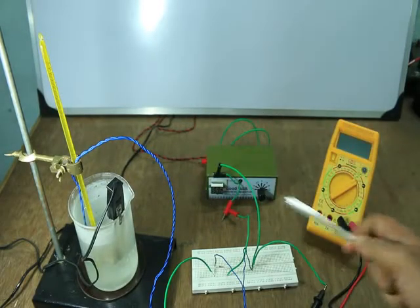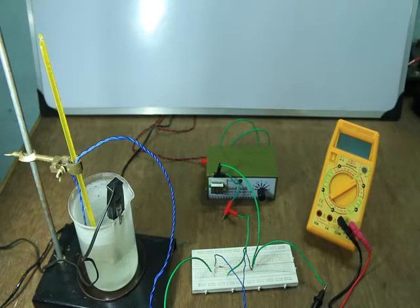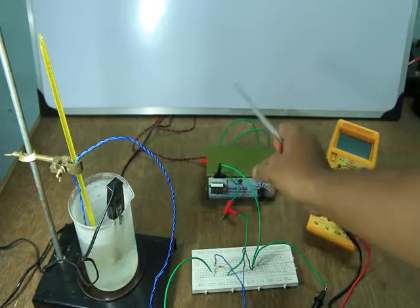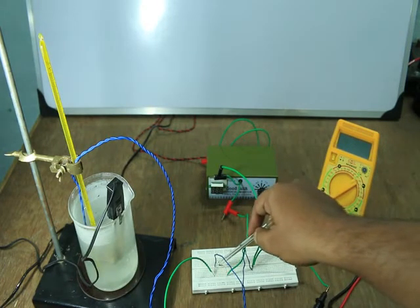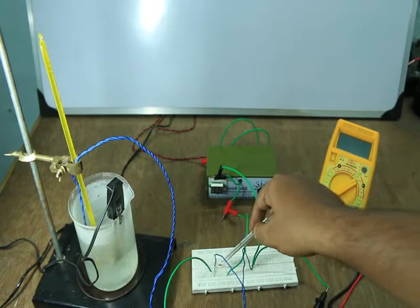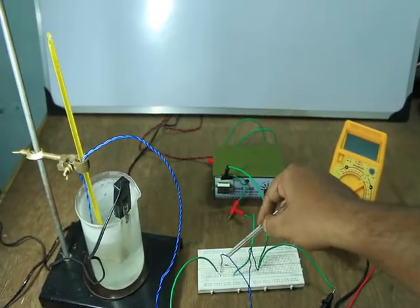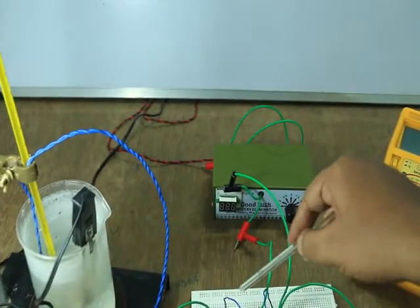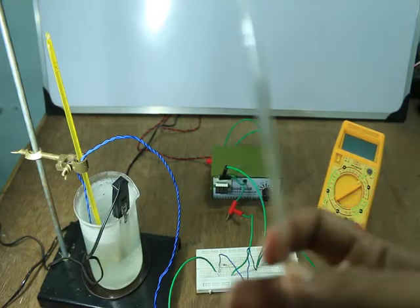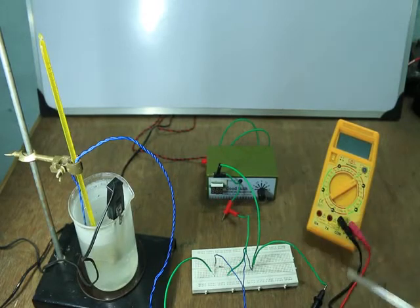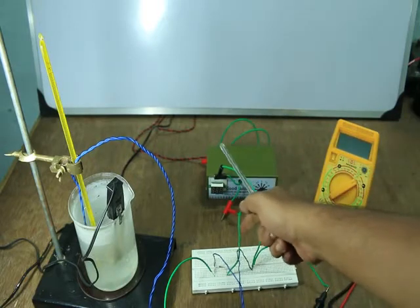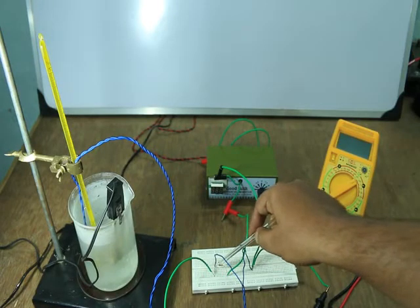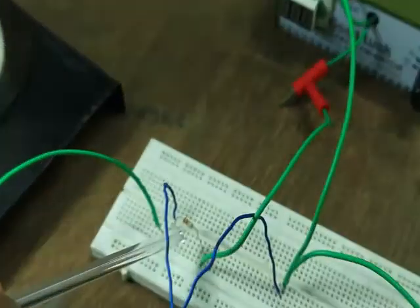This is the actual circuit as shown in the picture. This is the power supply — this is the positive terminal and this is the negative terminal. The positive terminal goes to a 10 kilo-ohm resistance, which you can see here; it is a 10 kilo-ohm resistor.